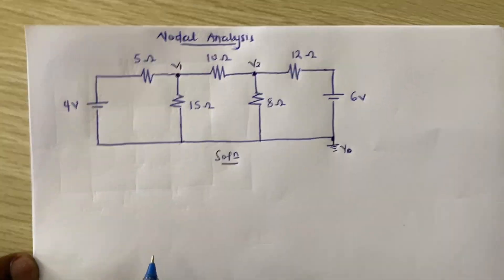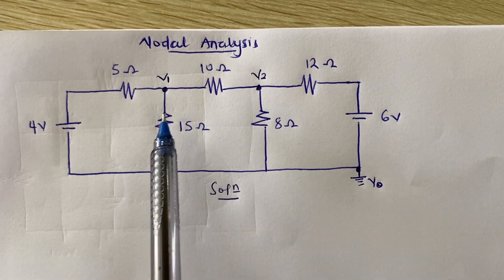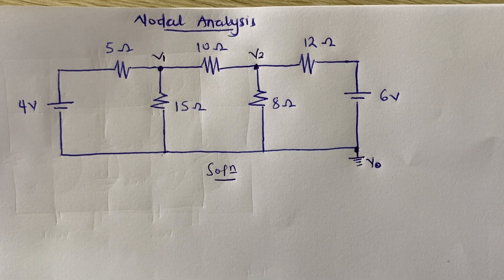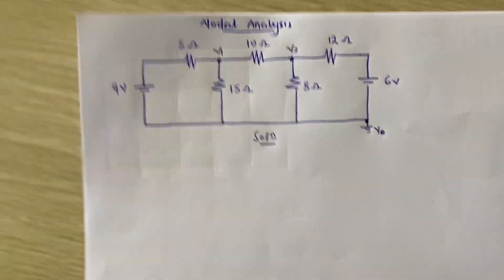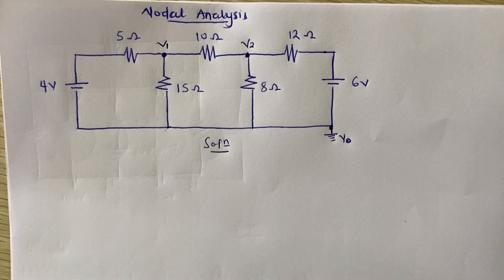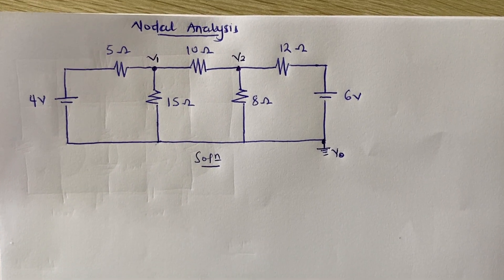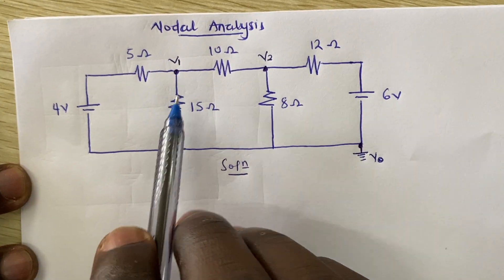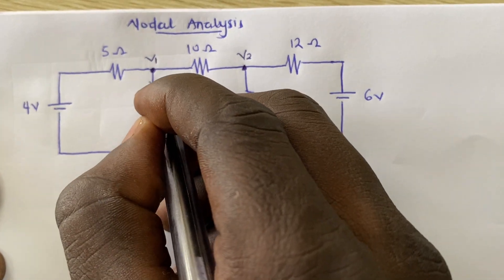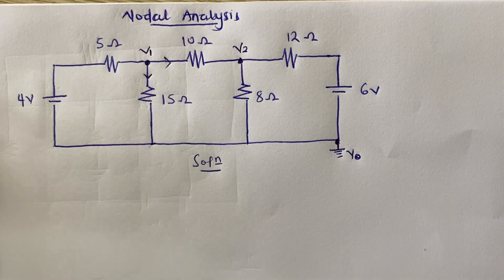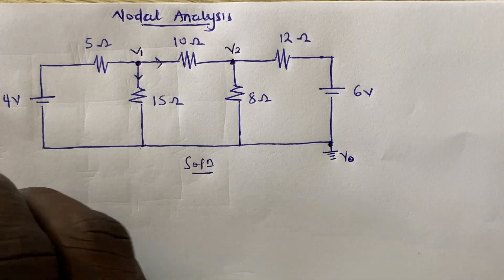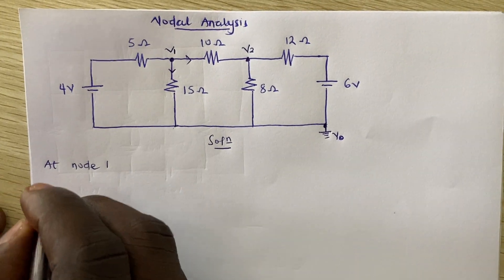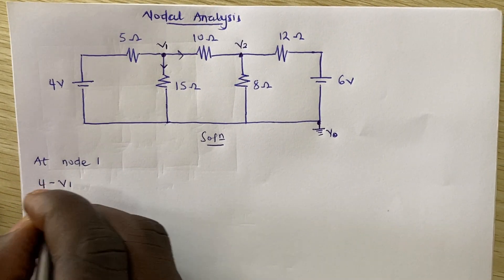Now let's consider this question. Once we are able to assign these nodal voltages, we look at the currents. Unless you have a voltage source producing current, you assume that all other currents are leaving that particular node. Here we have the four-volt source which produces a current entering the node. At Node 1, which is V1, we get: (4 − V1) / 5.